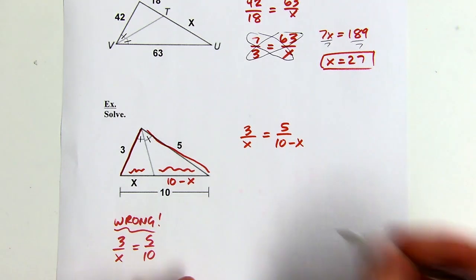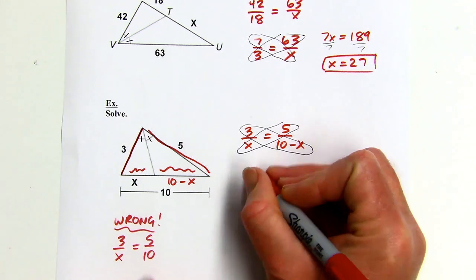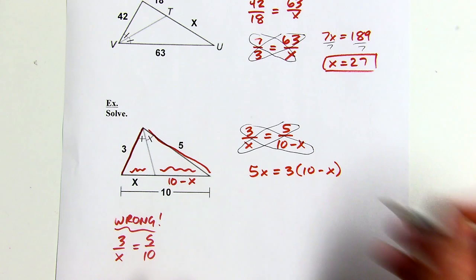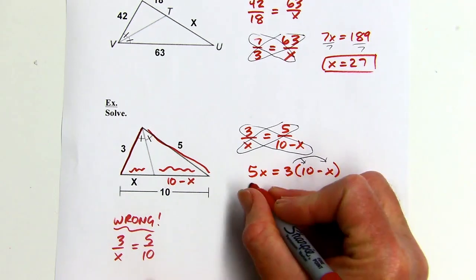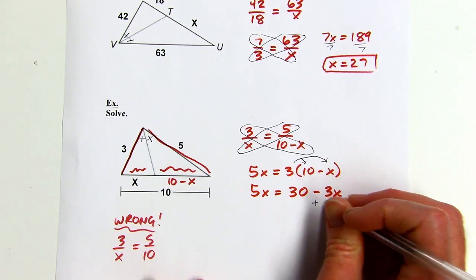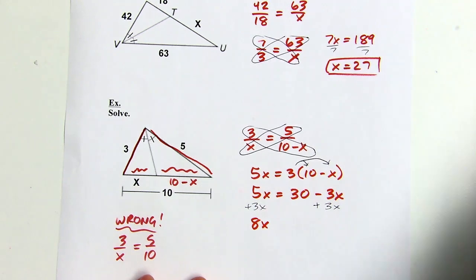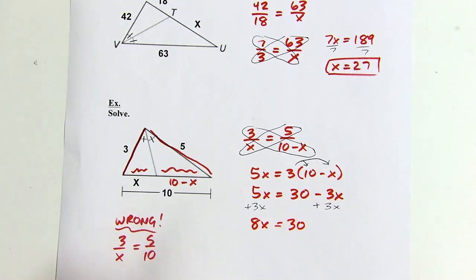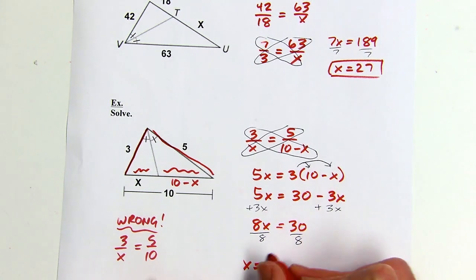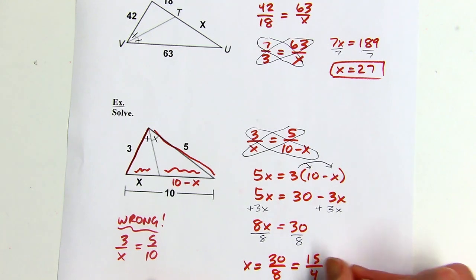There's no reducing to do here, so I'll go straight to cross multiplying: 5 times x gives 5x, and 3 times the quantity 10 minus x — don't forget to distribute — gives 30 minus 3x. So 5x equals 30 minus 3x. Adding 3x to both sides gives 8x equals 30, then dividing by 8 gives x equals 30 over 8, which reduces to 15 fourths, or 3.75.